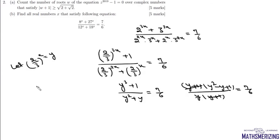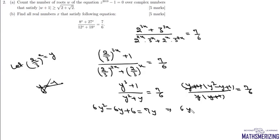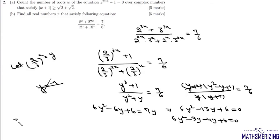We factor the numerator as (y+1)(y²-y+1) and the denominator as y(y+1), so one solution is y = -1. However, since y = (2/3)^x is an exponential function, it cannot take a negative value, so y = -1 is rejected. Cross-multiplying gives 6y² - 6y + 6 = 7y, which simplifies to 6y² - 13y + 6 = 0.